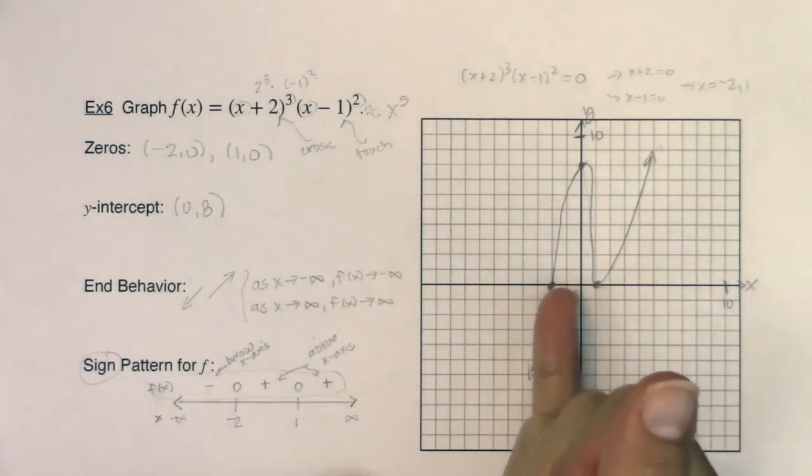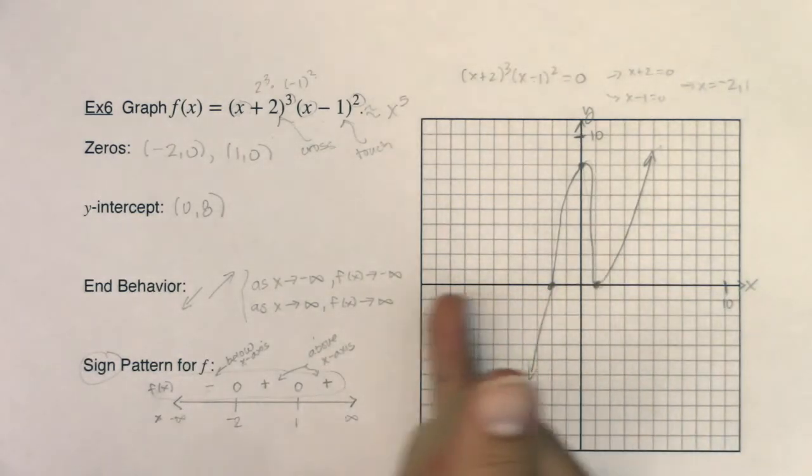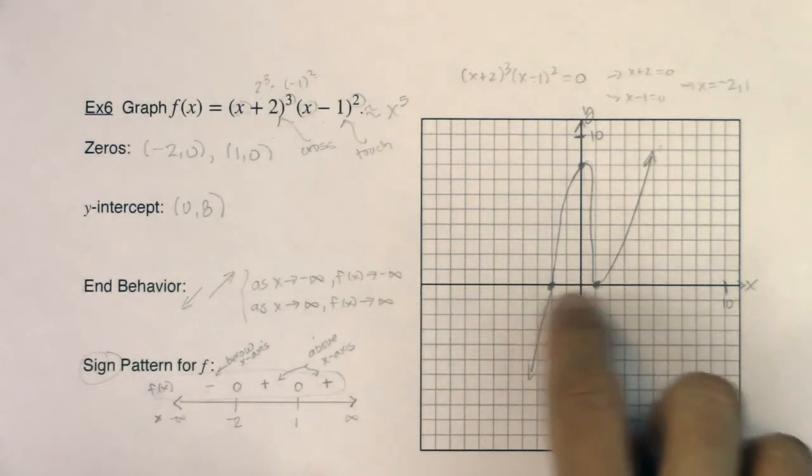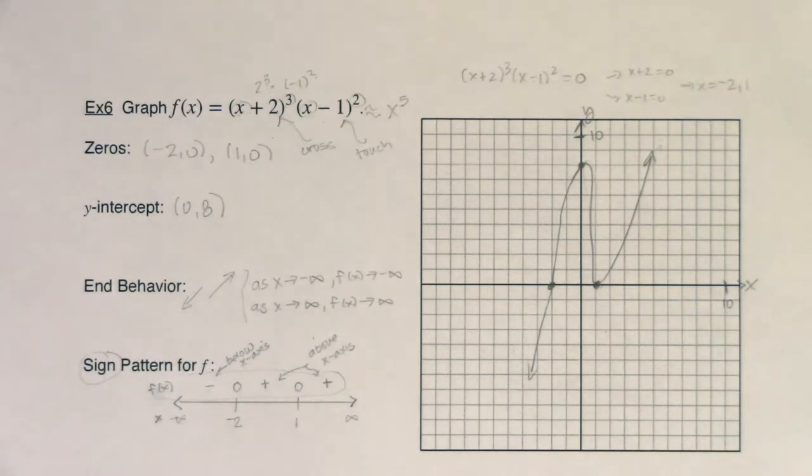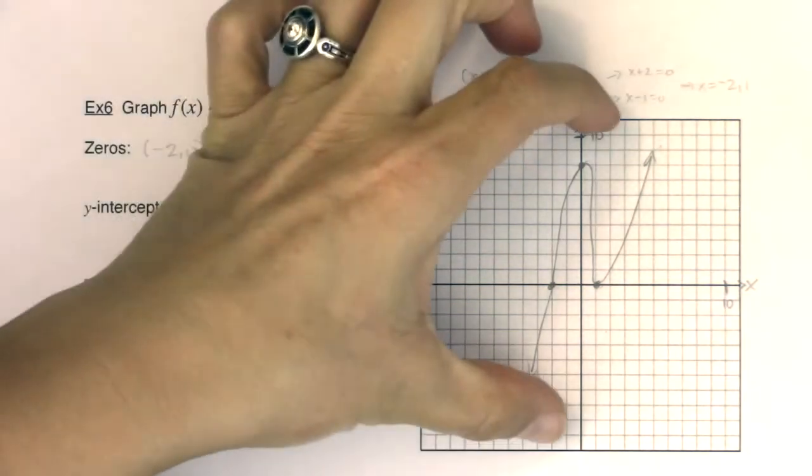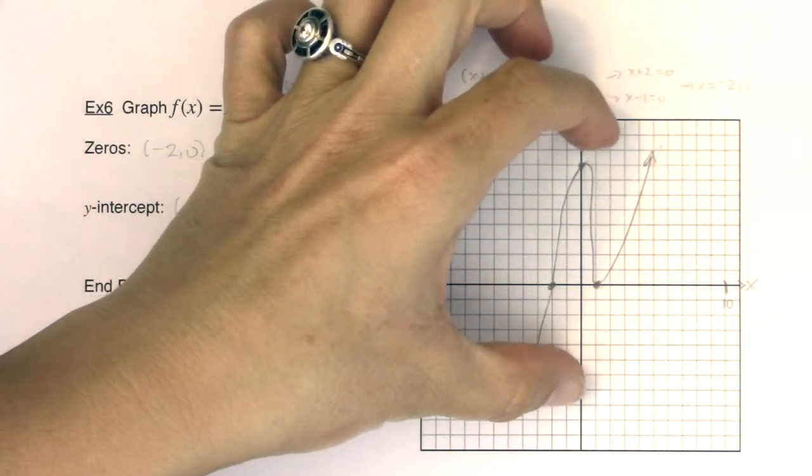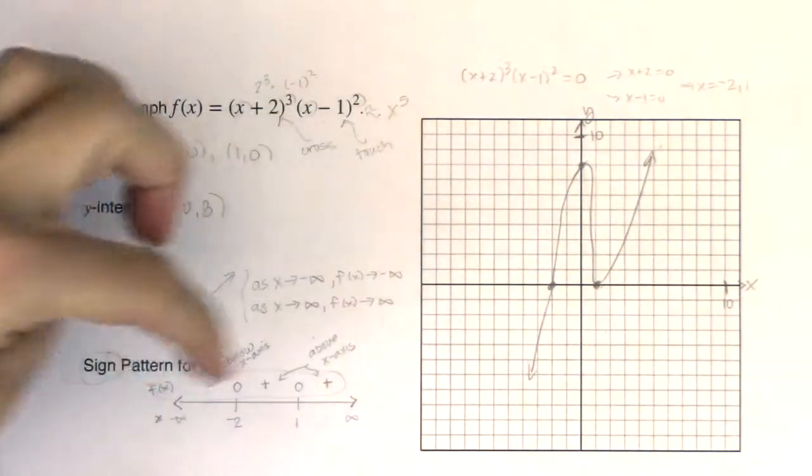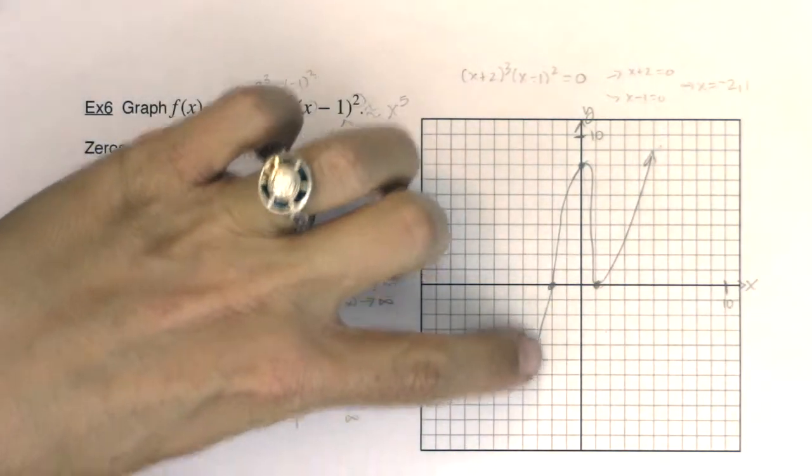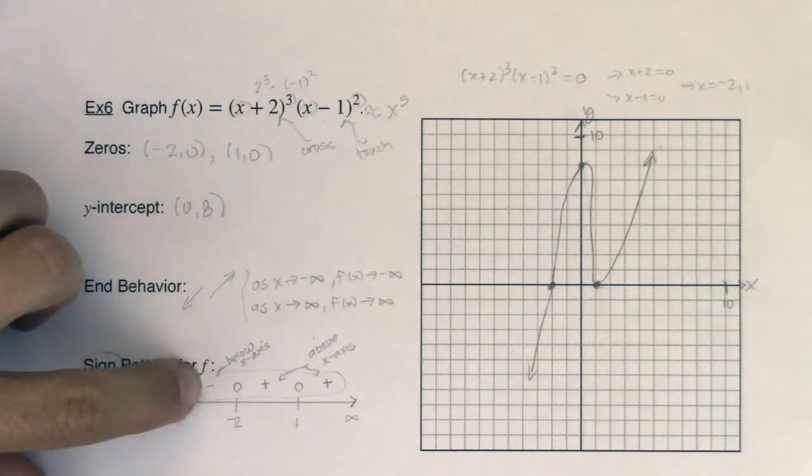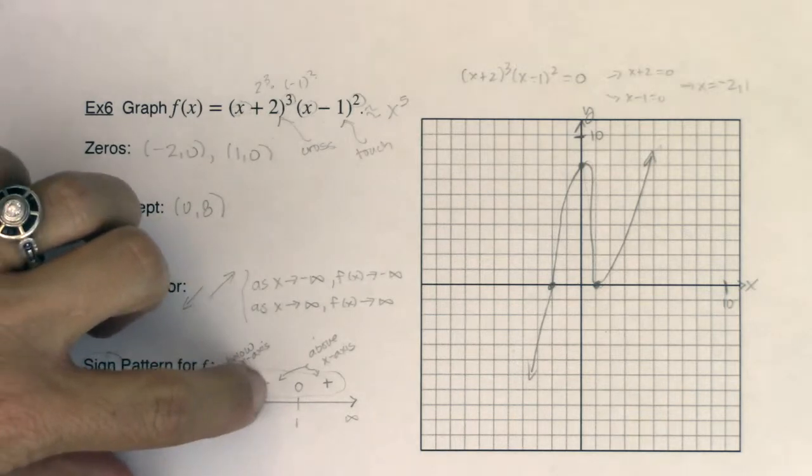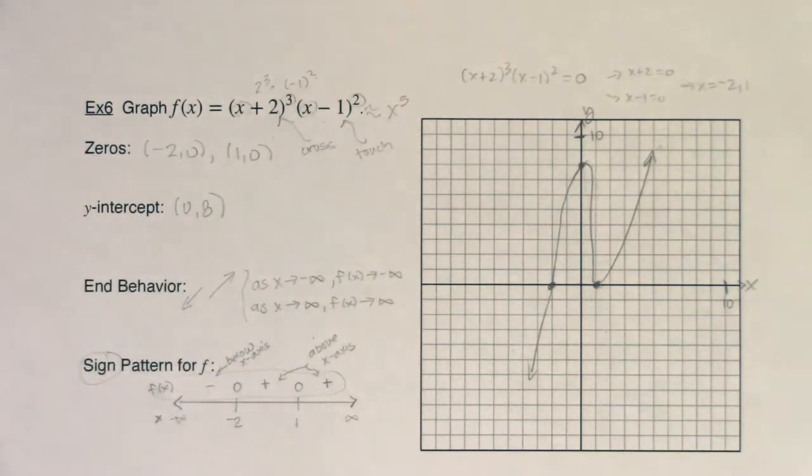And there were basically three pieces of my function split out between the zeros, right? We had the part of my function that was below x equaling negative 2, between negative 2 and 1, and x being 1 or higher. So that's a sign pattern. We kind of collapse this function, or this graph, into just the number line. And instead of showing the actual y-values we do on the coordinate system, we just classify them or qualify them as either below the x-axis, on the x-axis, or above the x-axis.